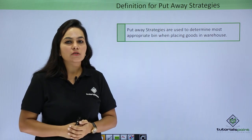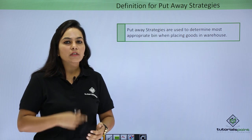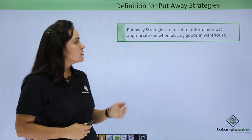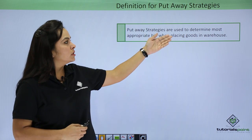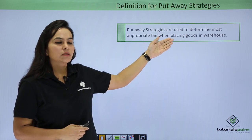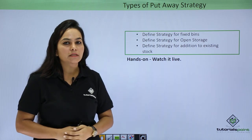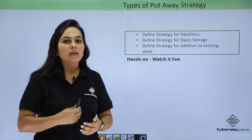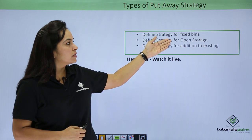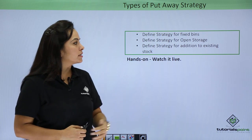Let's start with the definition of put-away strategies. As our storage is warehouse managed, we will be placing material in the warehouse, so we need to follow certain put-away strategies. Put-away strategies are used to determine the most appropriate bin when placing goods in a warehouse. We can define put-away strategies for different types of storage bins, like fixed bin, open storage, or addition to existing stock.